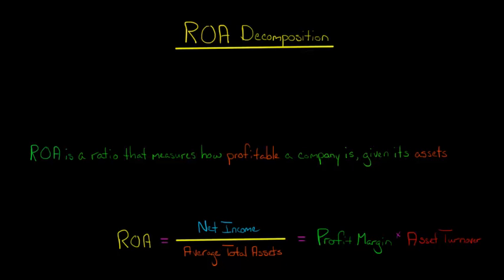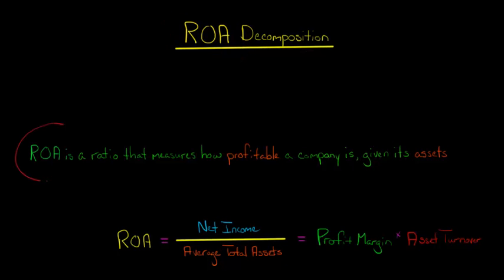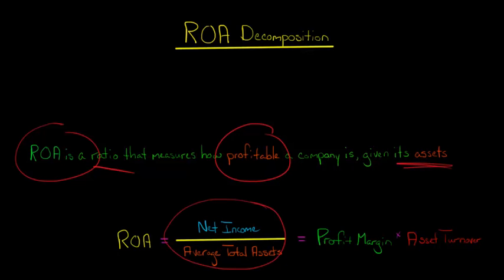In this video, we're going to discuss how you can decompose ROA into two components. Just a quick review: ROA is a ratio that we use to measure how profitable a company is given the amount of assets that the company has access to. ROA is net income divided by average total assets.